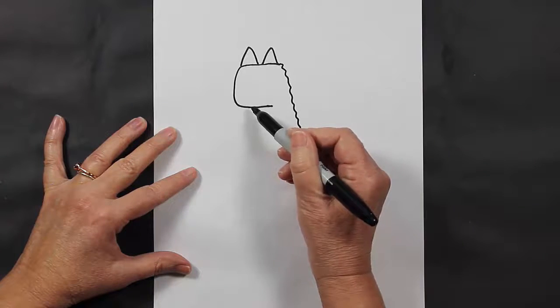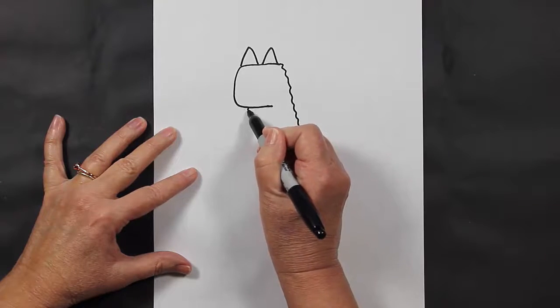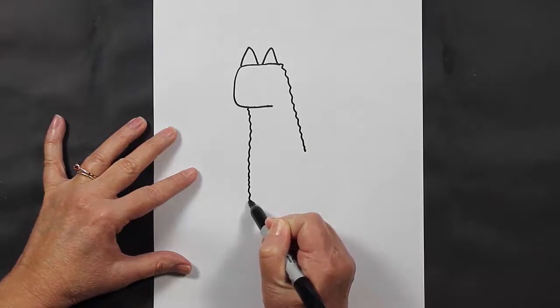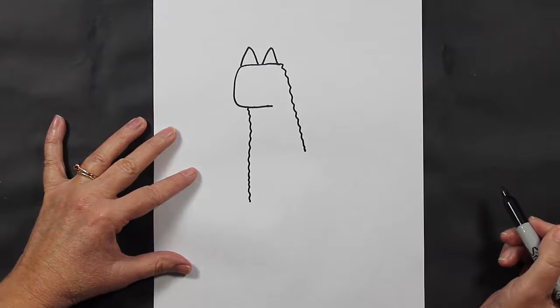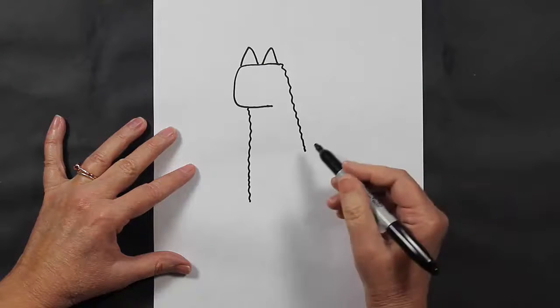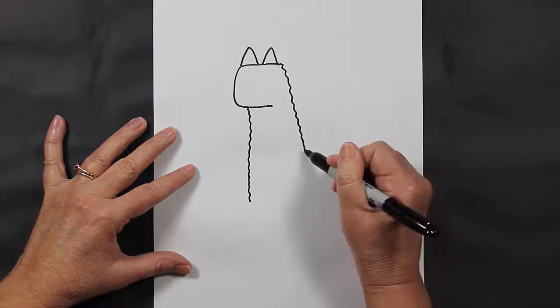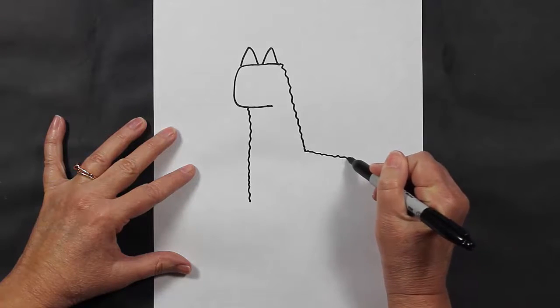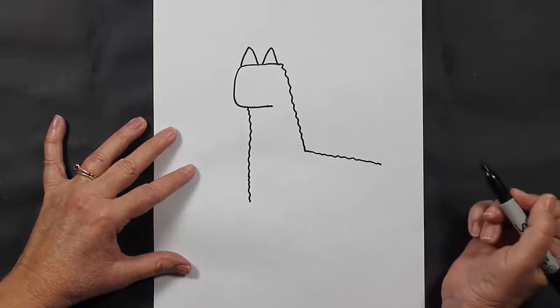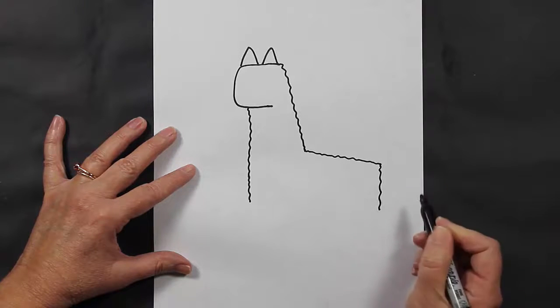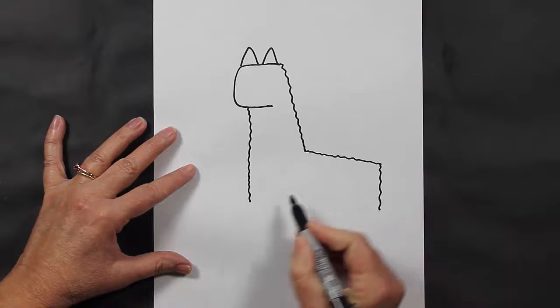Then from here we're going to do the same, except this is going to be a squiggly line that's more straight, about that far down. Now we are going to come back this way with a slightly squiggly line, a little bit slanted and coming down straight. So this line here and this line here...